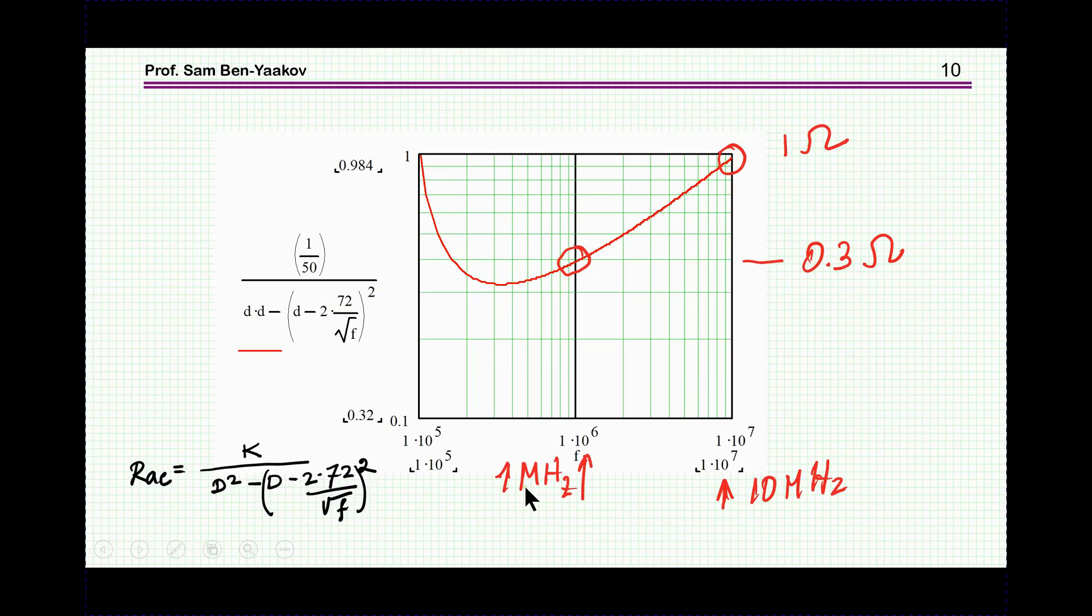Now, I have done the calculation, the more accurate calculation. This is the equation, k over d square, et cetera. Now, I have adjusted k to be fitting the data, this k here. And here, indeed, we see the behavior. We see here, they arrive here, between 0.3 at 1 megahertz to 10 megahertz 1 ohm, which is exactly what we got.